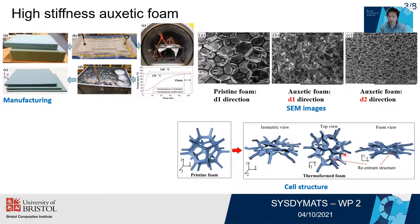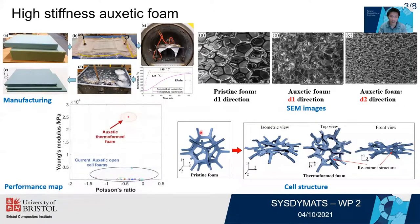The reentrant structure of the curved rib introduces the auxetic behavior into the foam. We measured the Poisson's ratio and the Young's modulus of this auxetic foam and found the modulus of this foam is much higher than the conventionally made auxetic foam.